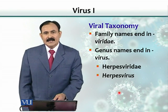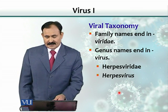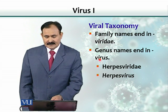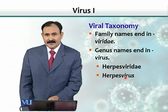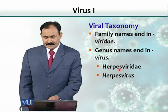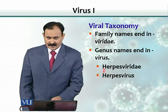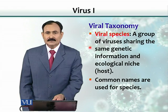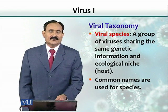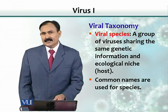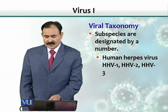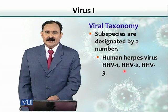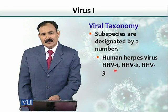We can name viruses similarly to how we name bacteria. The suffix '-viridae' indicates a family name, and '-virus' is placed at the end of a genus. So Herpesviridae is a family, Herpesvirus is a genus, and the species name is most often the disease or the host attached, for example, human herpesvirus. Some viruses may have different strains, and then we give them numbers like one, two, three.